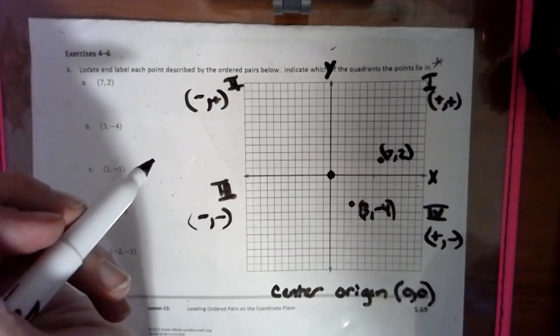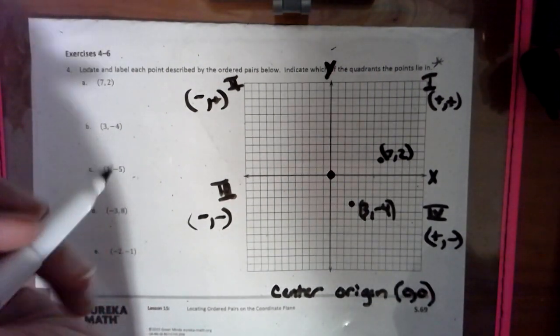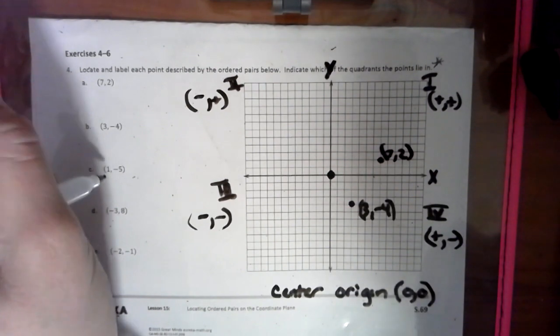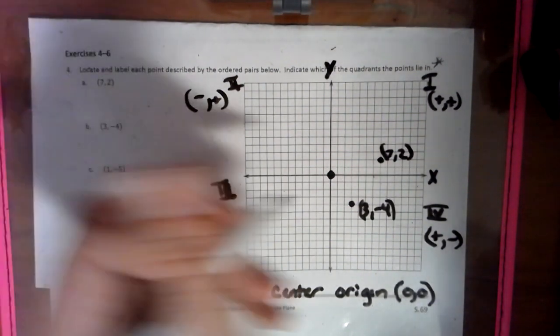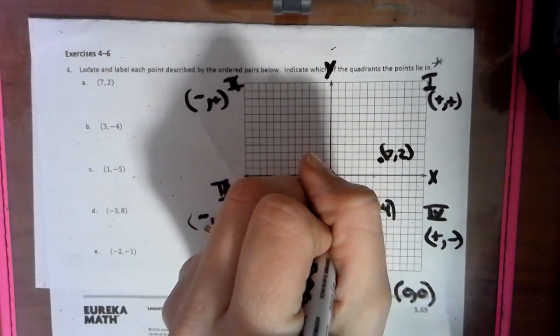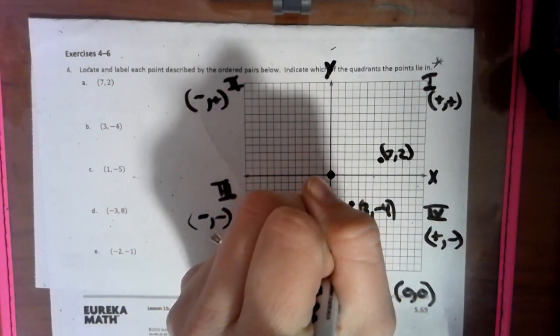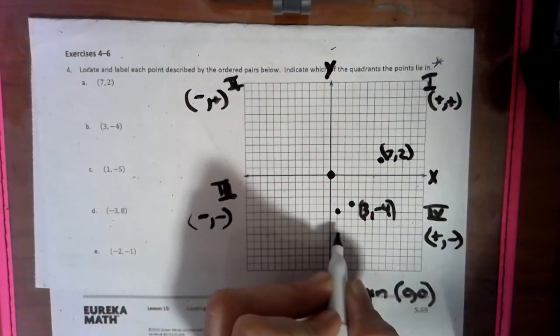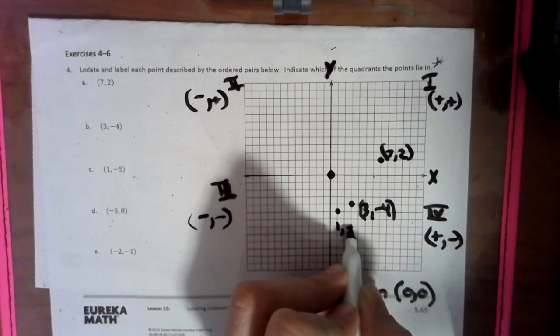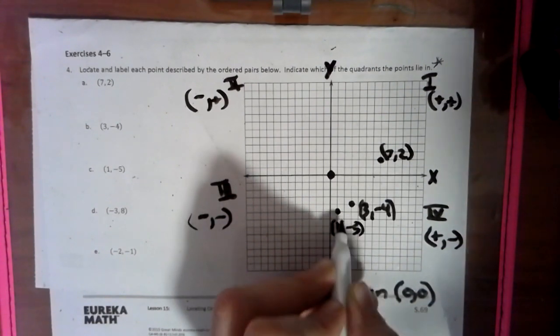Now sometimes they ask you to connect the dots, and sometimes they don't. Right now we're not connecting. So this is over to the positive 1, and down 5. 1, 2, 3, 4, 5. We're still in that same quadrant. So this is 1, negative 5. And we just write it around the point.